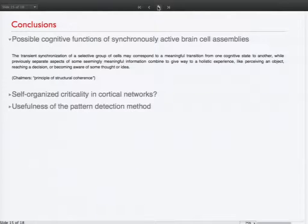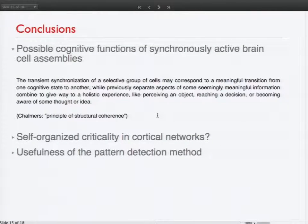So, the conclusions. This is, of course, all speculation, but at least we have something in our hands now. The transient synchronization of a selective group of cells may correspond to a meaningful transition from one cognitive state to another, while previously separate aspects of some seemingly meaningful information combine to give way to a holistic experience, like perceiving an object, reaching a decision, or becoming aware of some thought or idea. This would apply to... This would agree with the principle of structural coherence from David Chalmers, a philosopher. And this, of course, can only be speculation, but at least there's something in it. So we did a data mining test on the data and we found some, what we could call, symbols that repeat. So there must be some meaning to them. And we can think about what it might be.